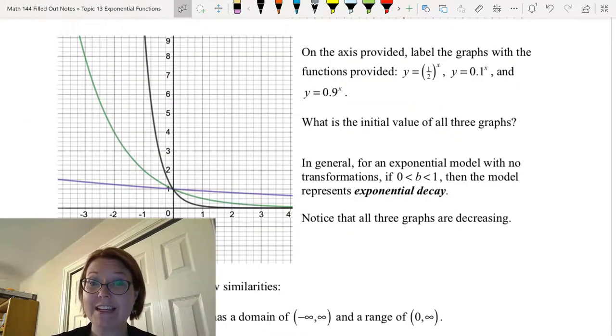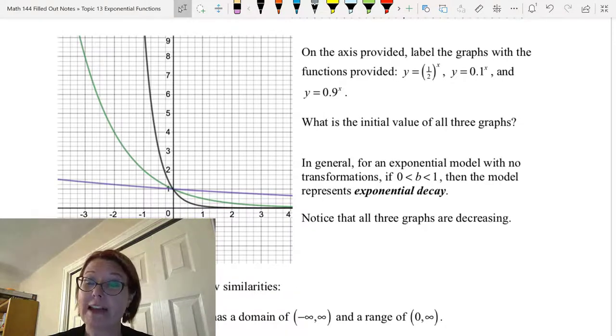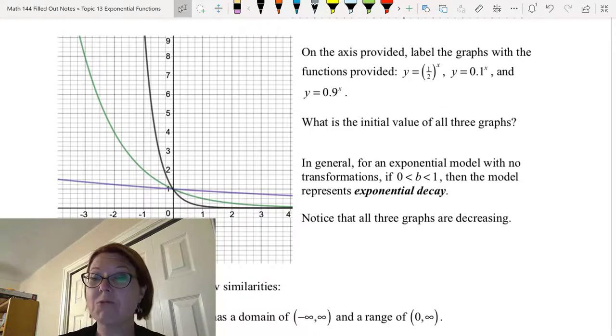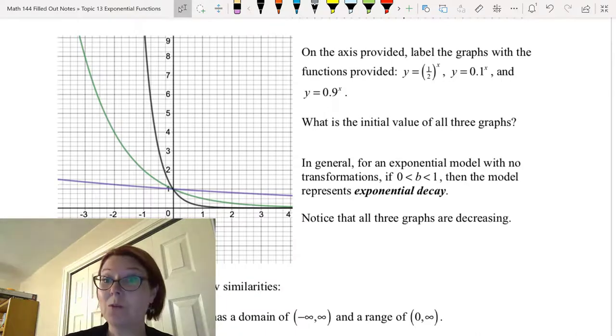Now in our next set, we have a coordinate axis with three graphs. Again, y equals 1/2 to the x, y equals 0.1 to the x, and y equals 0.9 to the x. Let's go over to Desmos and see what these three graphs look like.